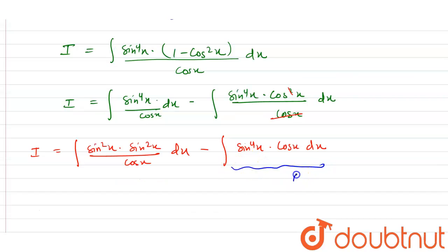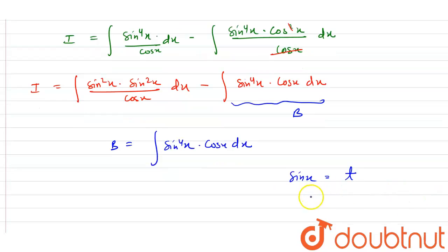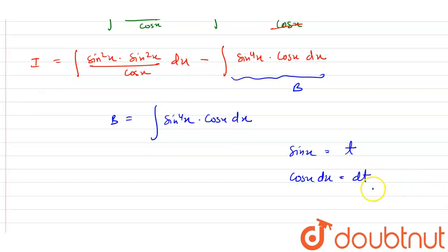Let this second part be called B. So B equals the integral of sin⁴x times cos x dx. Now let sin x = t. Differentiating both sides with respect to x, we get cos x dx = dt, because the differentiation of sin x with respect to x is cos x. We replace sin x with t, so this becomes the integral of t⁴ dt.